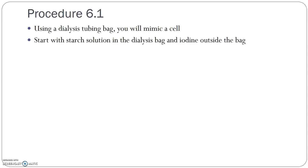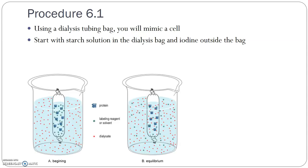In lab, you are going to set up a mimicked dialysis tubing bag to represent the cell, and you are going to use two solutions. You are going to use a starch solution, which is water with starch dissolved in it, and then you're going to use an iodine solution, which is water with iodine dissolved into it. When you set this up, you are going to be making a bag made of this plastic dialysis tubing.